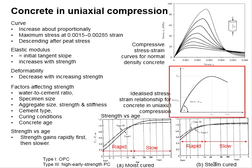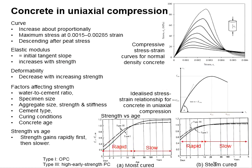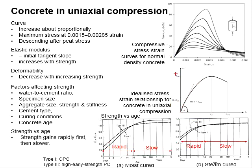The diagram here shows the idealized stress-strain relationship for concrete in uniaxial compression, and shows how the elastic modulus is determined. As the curve is not perfectly proportional, different persons may determine the elastic modulus differently. To make it consistent, first we need to determine the FCM, which is the highest point of the stress-strain curve.